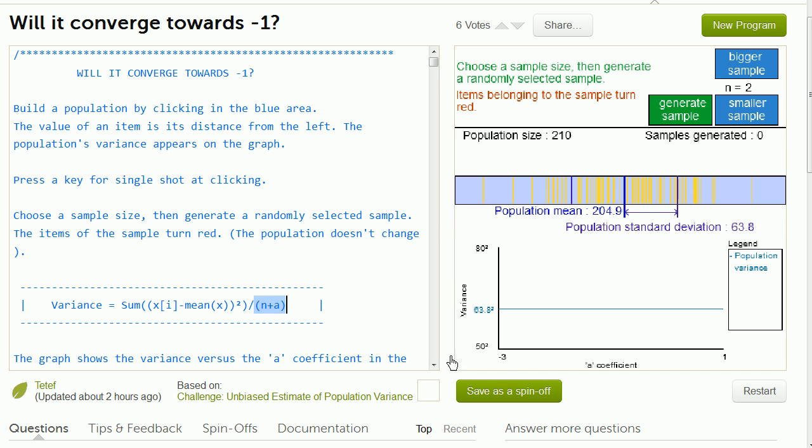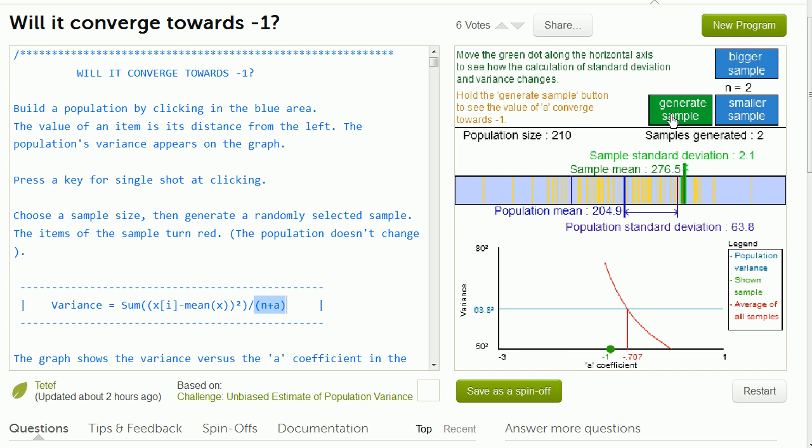And it's going to vary a. It's going to divide it by anywhere between n plus negative 3, so n minus 3, all the way to n plus a. And we're going to do it many, many times. We're going to essentially take the mean of those variances for any a and figure out which gives us the best estimate. So if I just generate one sample right over there.